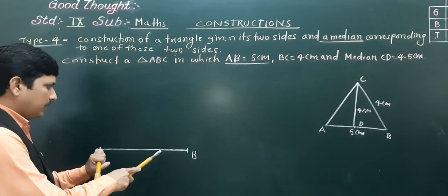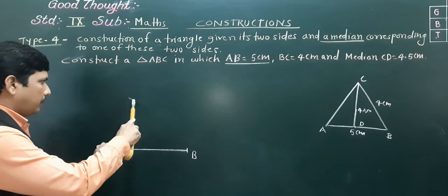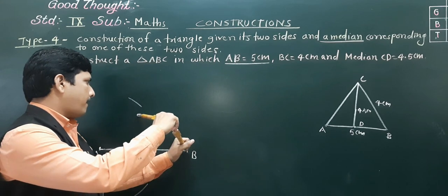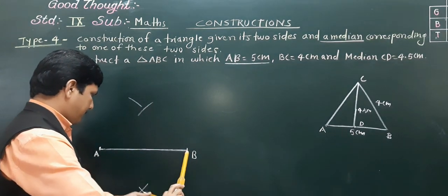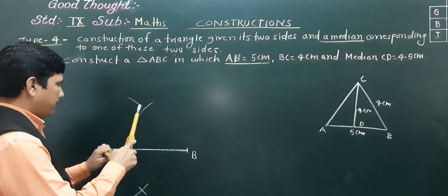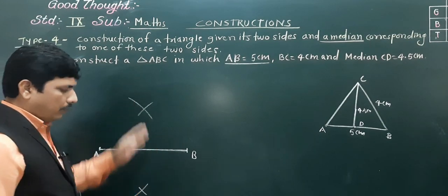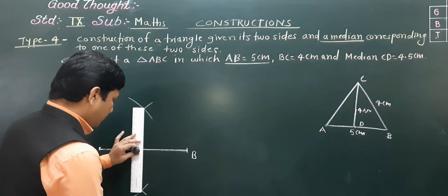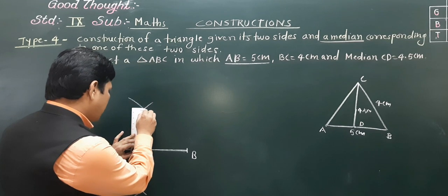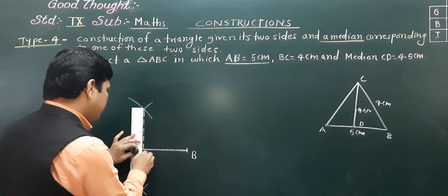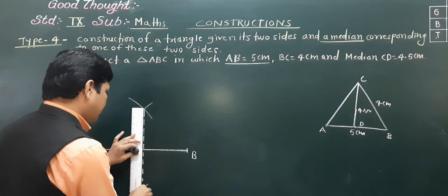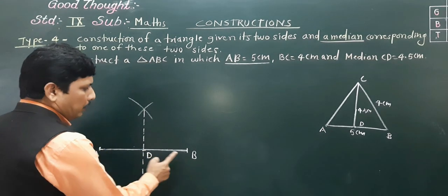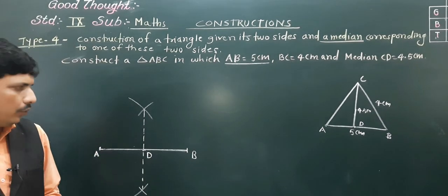Taking more than half distance, with the same radius make arcs from both ends. When you join the intersection points, you get the midpoint of AB. Join with dotted lines. This point is our point D, the midpoint of AB.